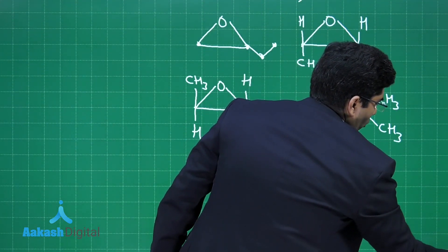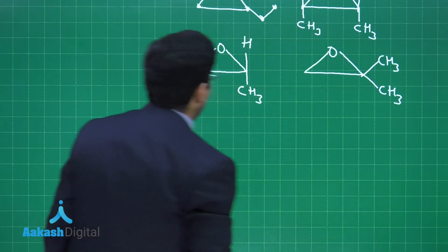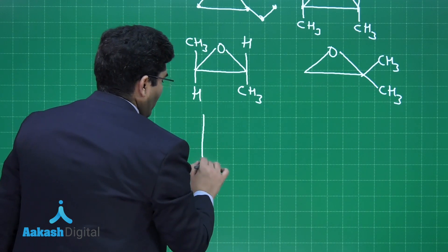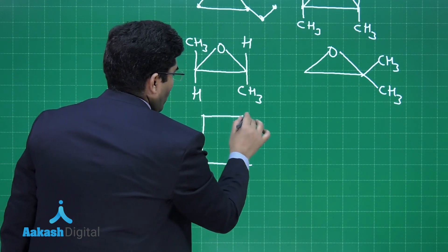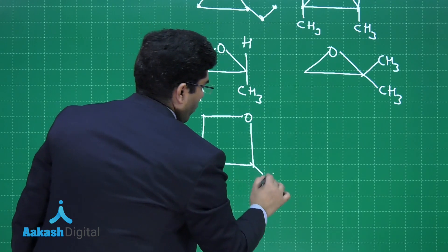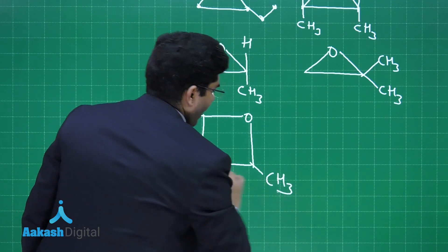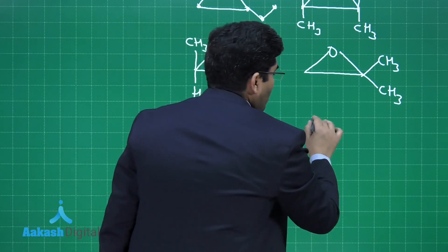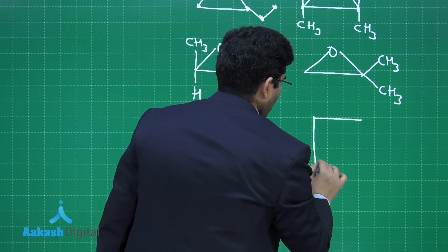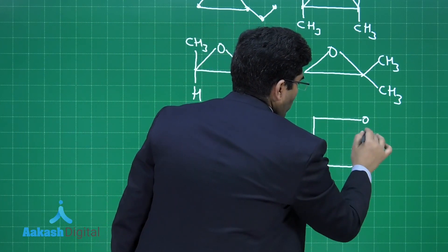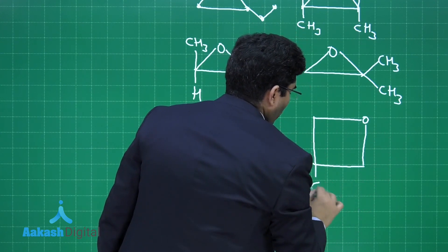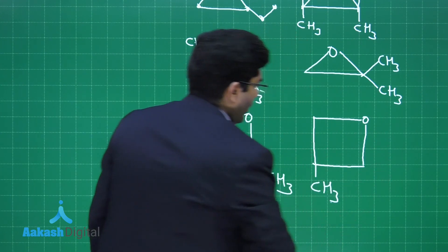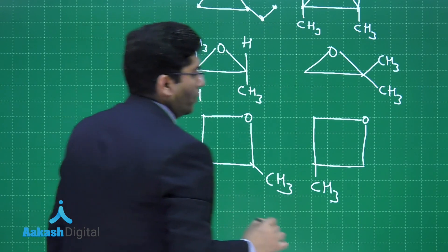So, let us move on to the four-membered ring. If we have four-membered ring, then what will happen? Oxygen and one methyl group, adjacent to oxygen. Second possibility is oxygen and one methyl group here.